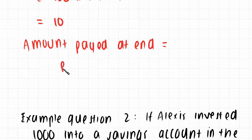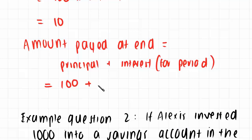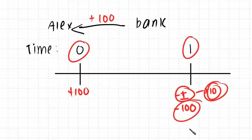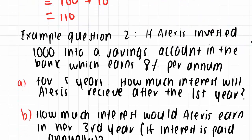The total amount Alex would need to pay at the end is the principal plus the interest for the period. Since interest is paid annually, that is $100 principal plus $10 interest, giving a total of $110. So there was a $100 inflow from borrowing and a $110 outflow at the end of the year.